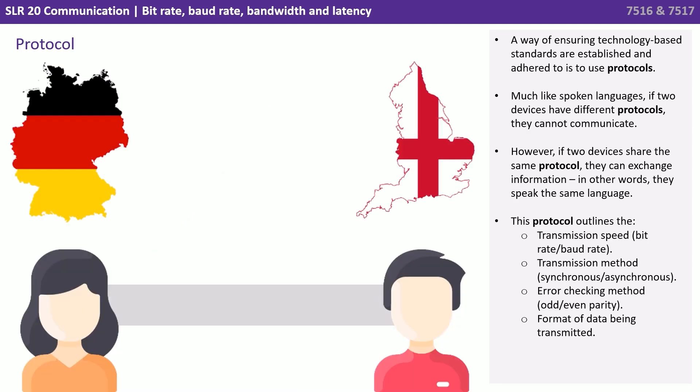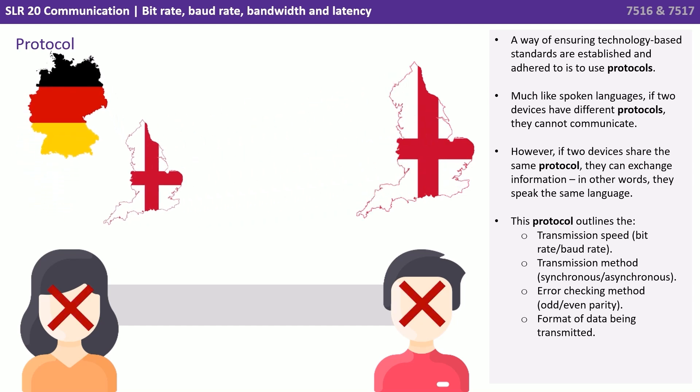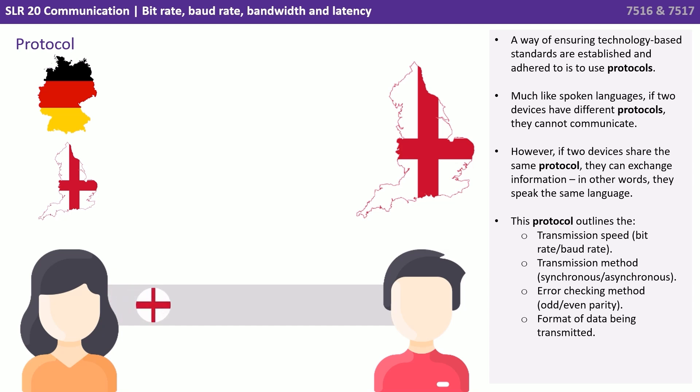A way of ensuring technology-based standards are established and adhered to is the use of protocols. Much like spoken languages, if two devices have different protocols, they cannot communicate. However, if two devices share the same protocol, they can exchange information — in other words, they speak the same language. This protocol can outline the transmission speed, the transmission method, error checking methods and the format of the data being transmitted.